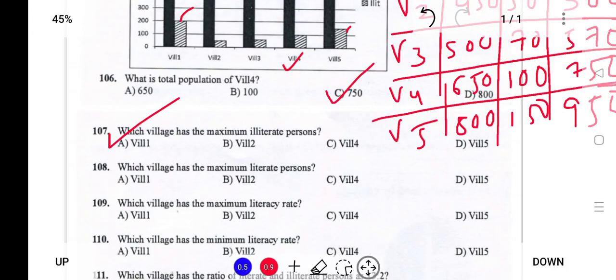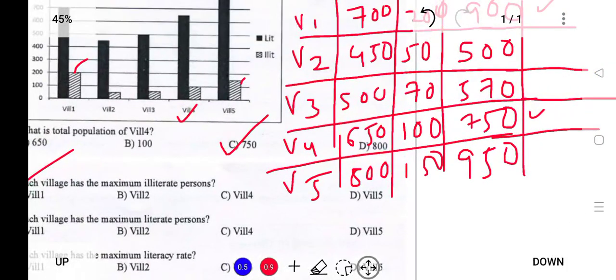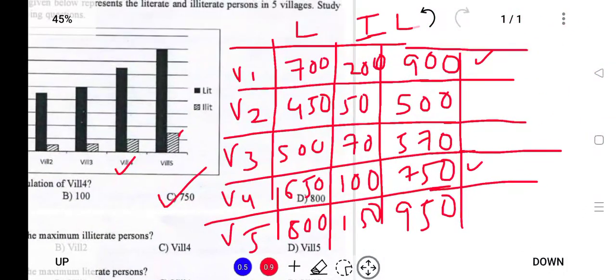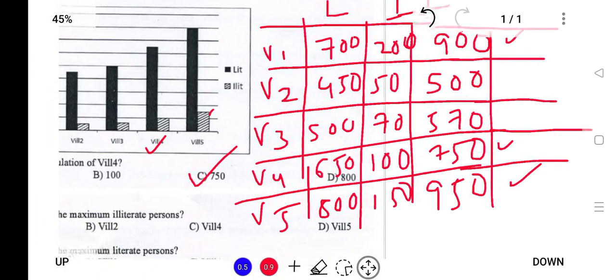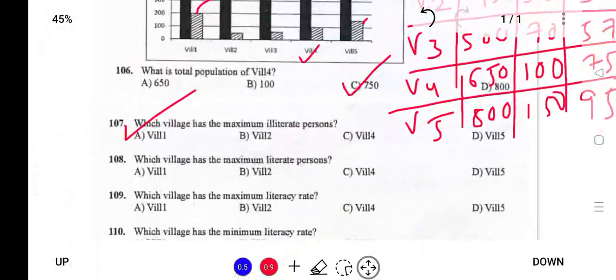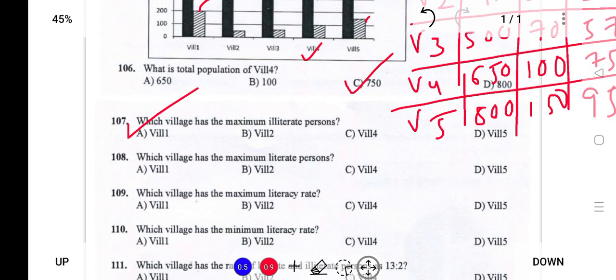Next: Which village has the maximum literate persons? Looking at the literate values across all five villages, Village 5 has the maximum with 800. So the answer is Village 5, which is option D.